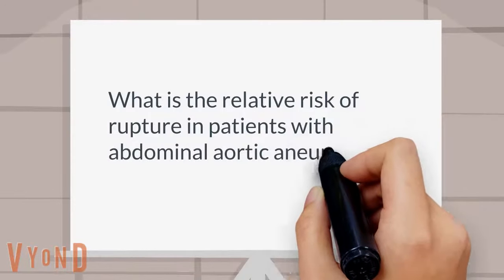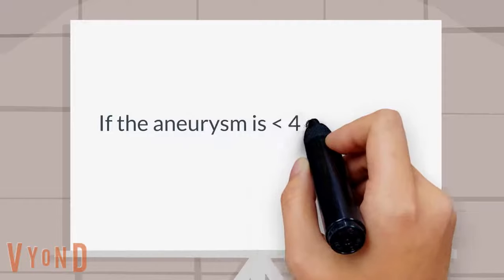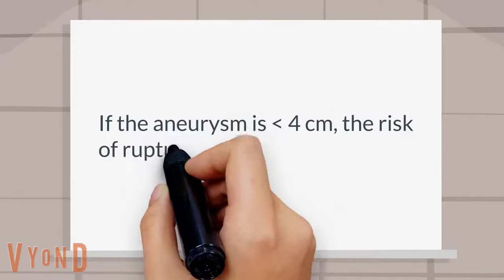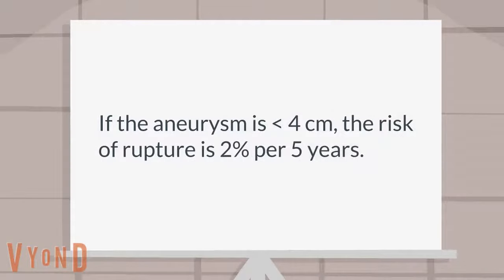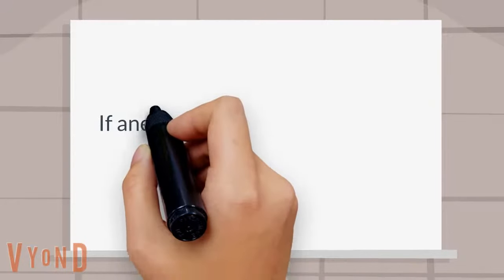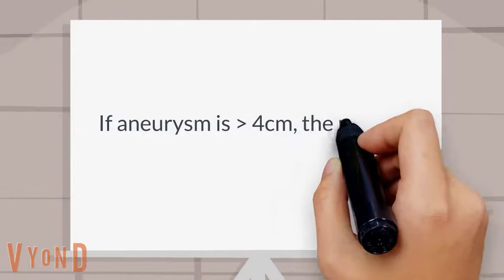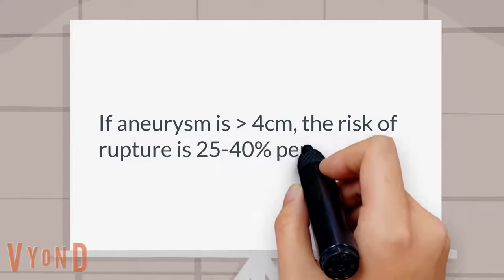If the aneurysm is less than 4 centimeters, the risk of rupture is 2% per 5 years. If the aneurysm is greater than 4 centimeters, the risk of rupture is 25 to 40% per 5 years.